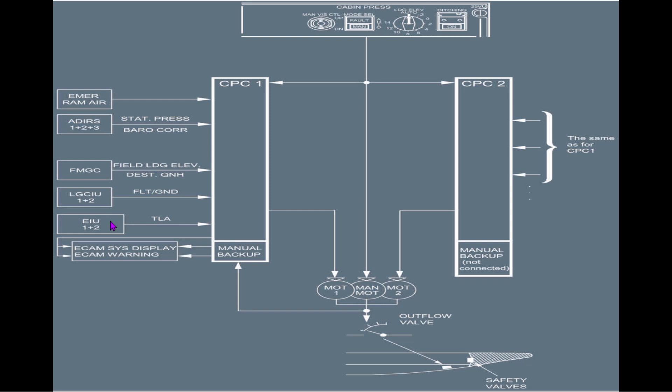Wie weiß das Flugzeug, dass wir Flex oder TOGA gesetzt haben und das Spiel beginnt? Das weiß er durch die Engine Interface Unit – ein System, das die Schalterstellung der Gashebel weitergibt. Diese Unit erkennt, wie weit der Gashebel nach vorne gesetzt wurde, und gibt das an den Cabin Pressure Controller weiter, sodass dieser mit der Kabinendruckregelung beginnt.